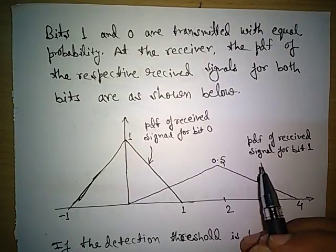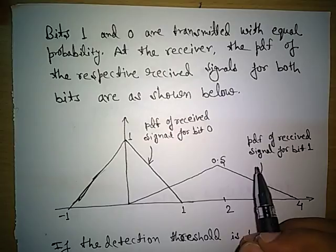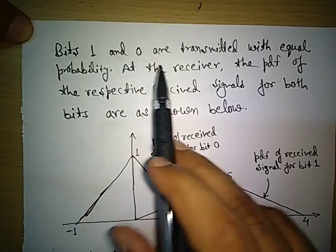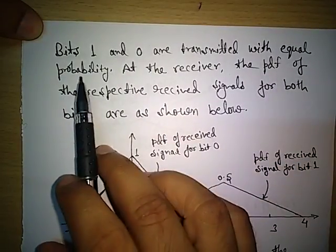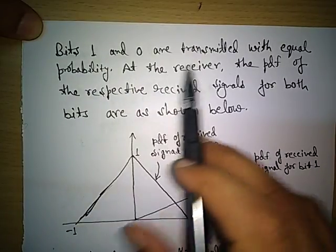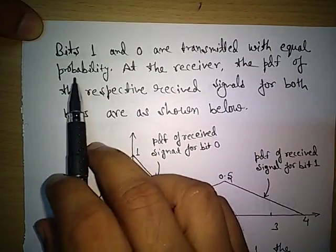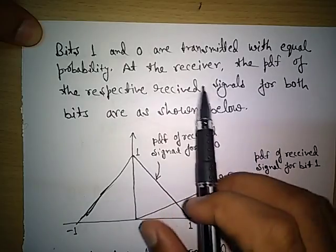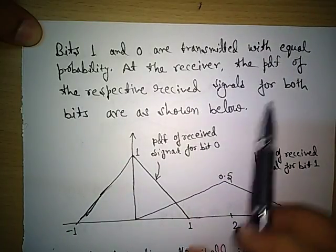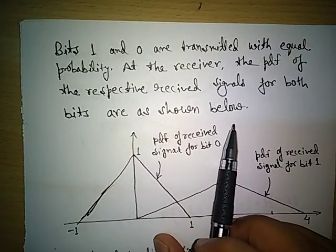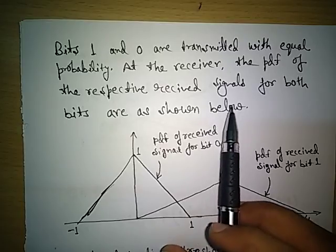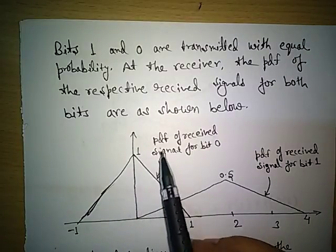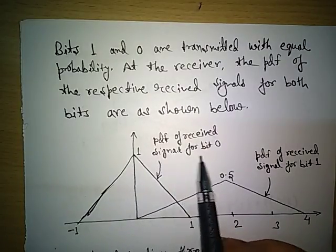In this video we will learn about bit error rate. I have taken a problem from a previous grade exam. The question states that bits 1 and 0 are transmitted with equal probability. There will be two signals, so the probability will be half. At the receiver, the PDF of the received signal for both bits is as shown. While transmission there may be some error or noise, so at the receiver the probability density function has been given.